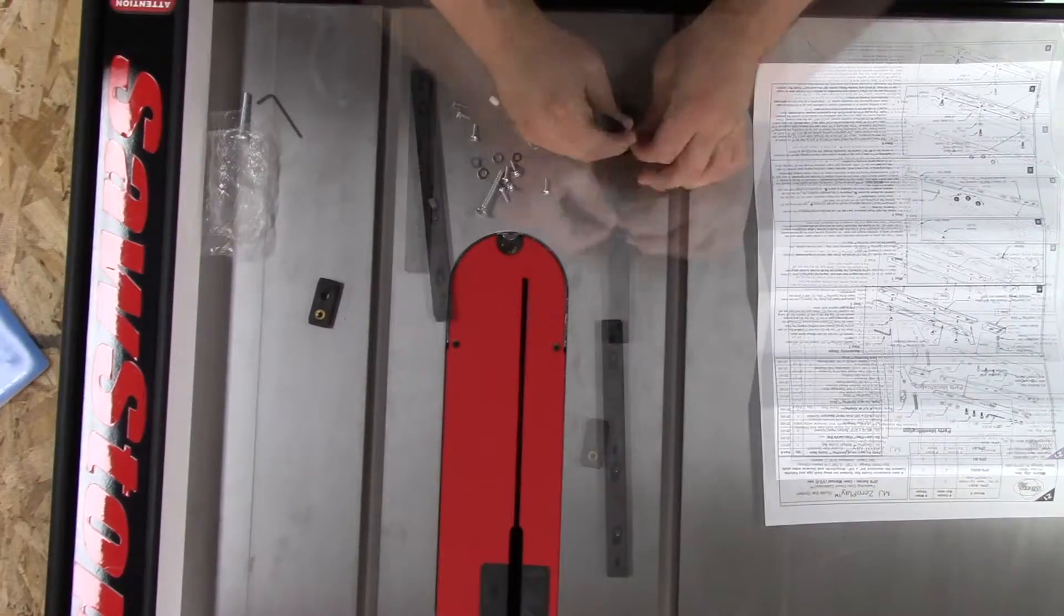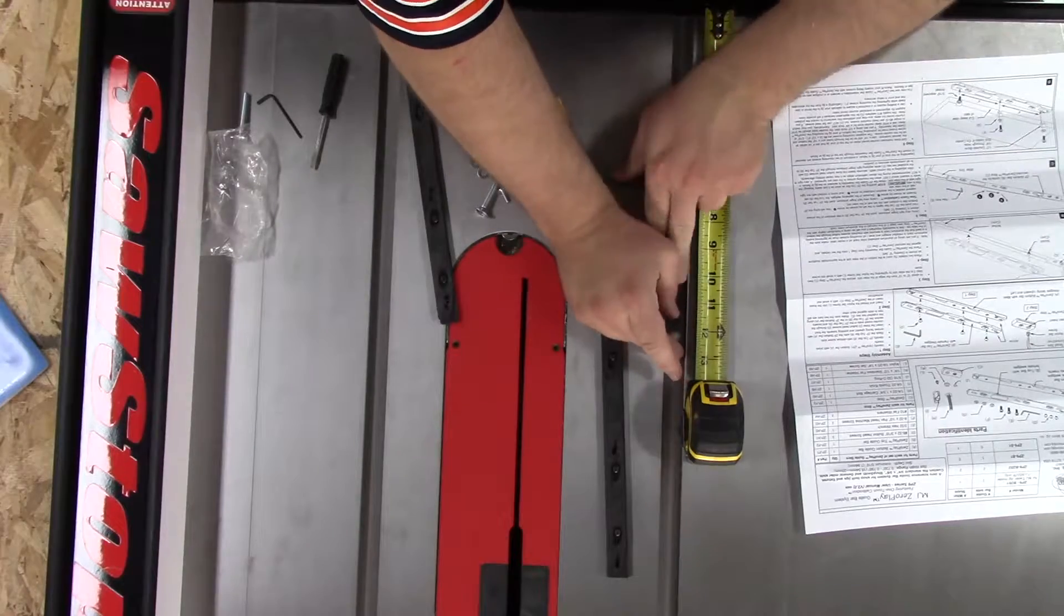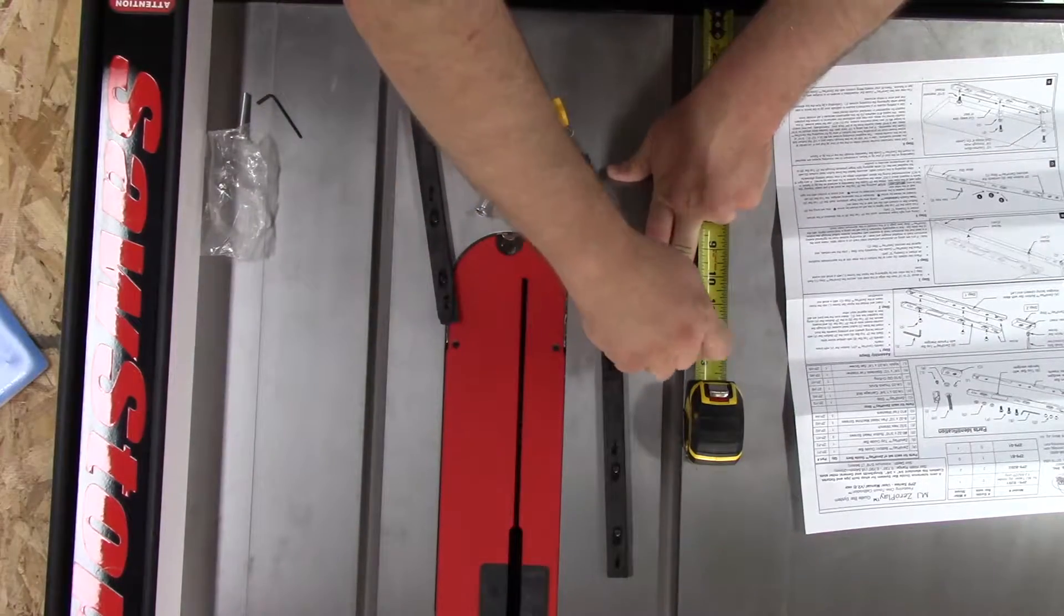Essentially this is a top and bottom strip that you set on top of each other, loosely secure together, then expand them until they lightly touch the sides of the miter slot. Then tighten down the screws and attach your jig to them.